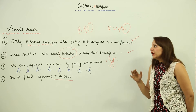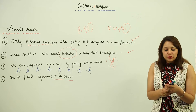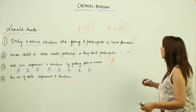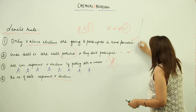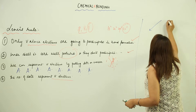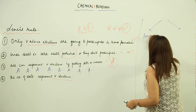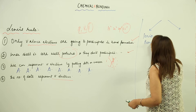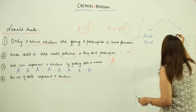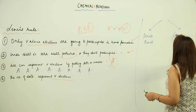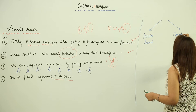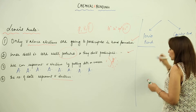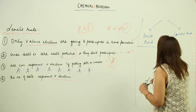Now we are going to use these rules to show how we can form bonds. We have two types of bond: the transfer of electrons is the ionic bond, and the sharing of electrons is the covalent bond. I am just going to show you one ionic bond example first.